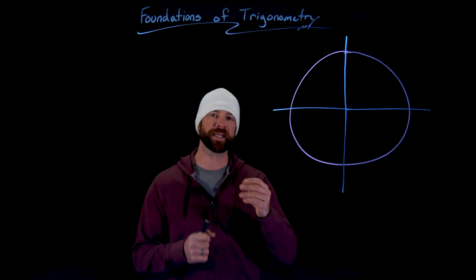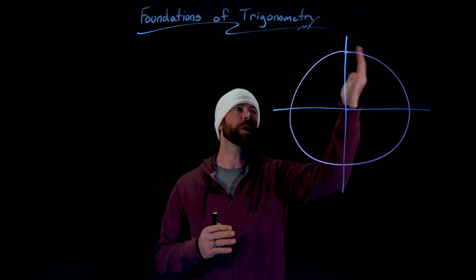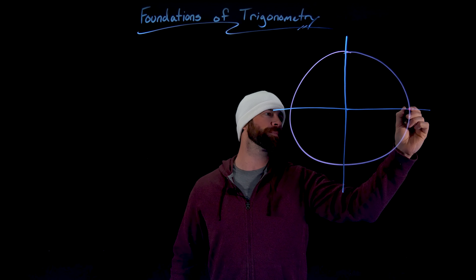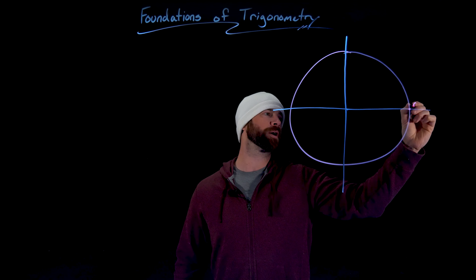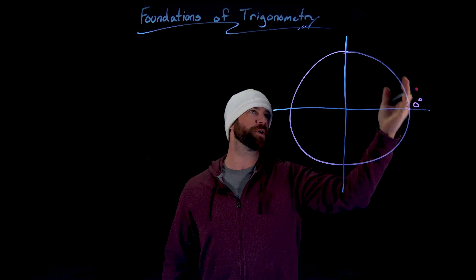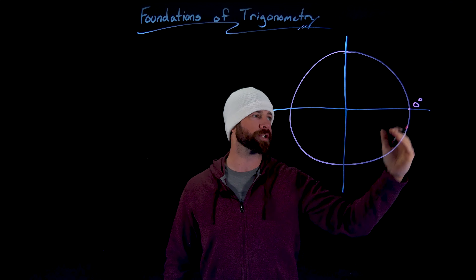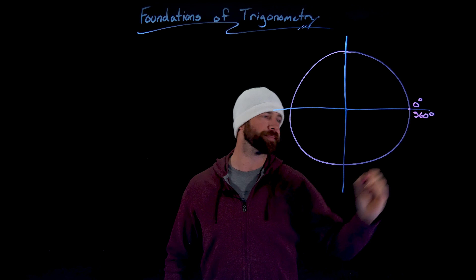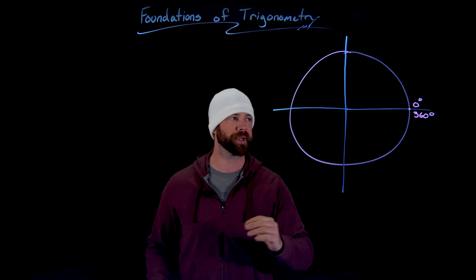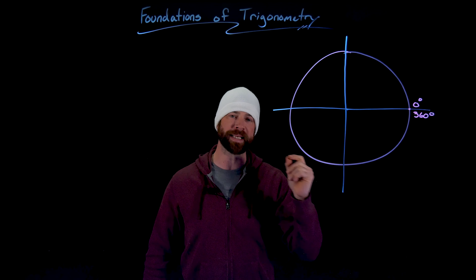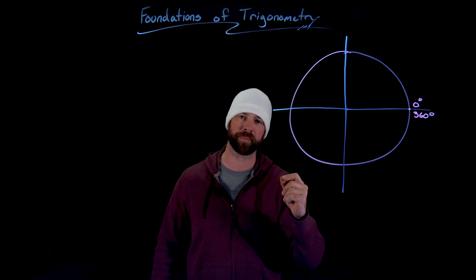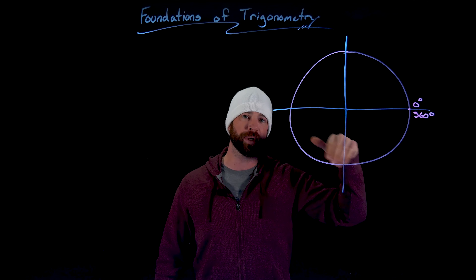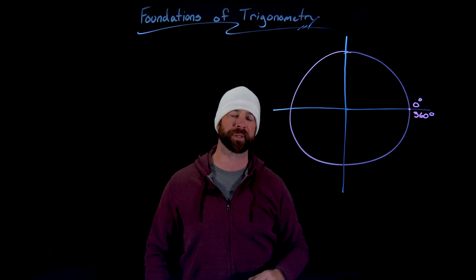Fundamentally, what degrees is based on is the fact that to do a full circle is 360 degrees. We would call zero degrees this starting point right here. If we go all the way around this circle, we've completed 360 degrees. Importantly, we would call zero degrees and 360 degrees co-terminal, because starting on a circle and completing either zero or 360 degrees, we would end up at the same point.